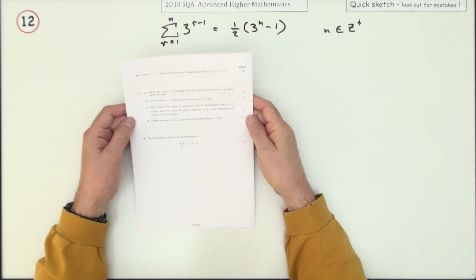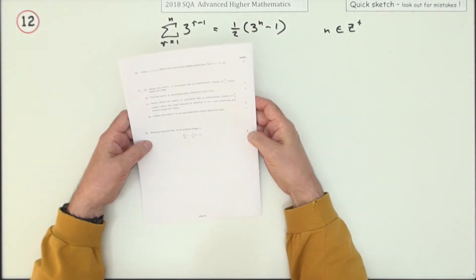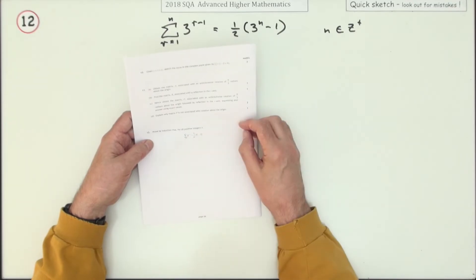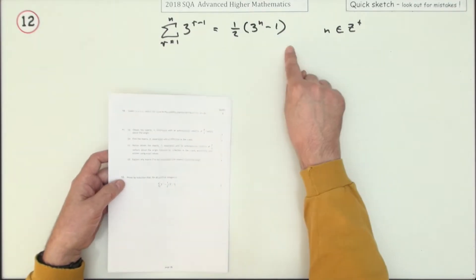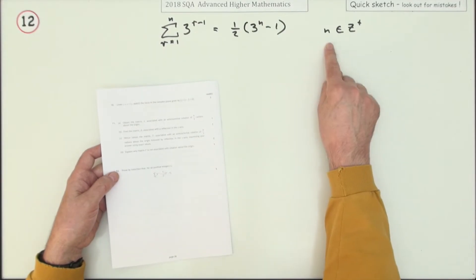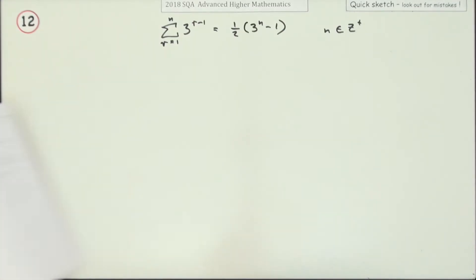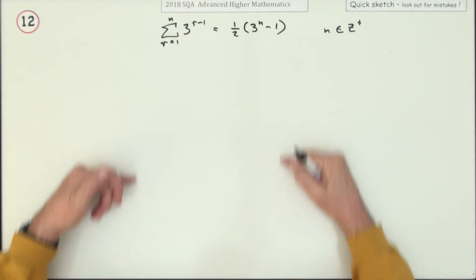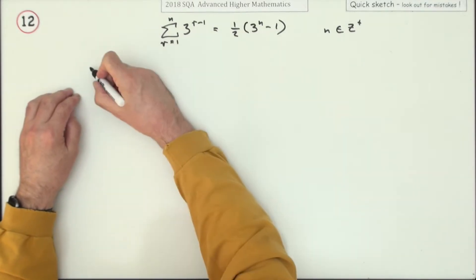Number 12 from the 2018 Advanced Higher Mathematics. Five marks here for proof by induction. Prove that this proposition here is true for all positive integers, that is, natural numbers. Well, it should be a well-trodden path here. You just follow the routine.